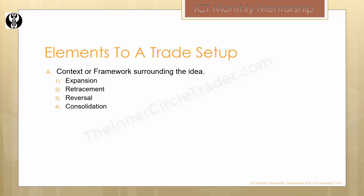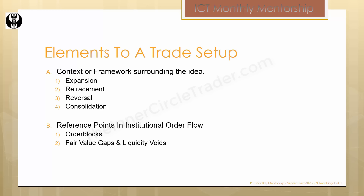We learned in the market maker series that there's really no such thing as the market doing nothing in consolidation — it's exactly accumulating orders. The other characteristic we use for defining elements to a trade setup is using these four criteria for context and framework to specific reference points in institutional order flow. The first is order blocks. The second is fair value gaps and liquidity voids. Third, liquidity pools and stop runs. And lastly, equilibrium.